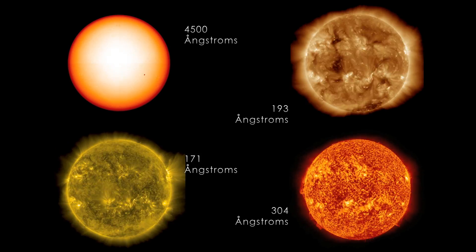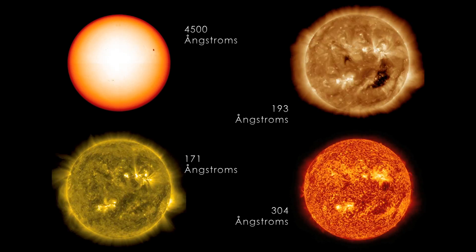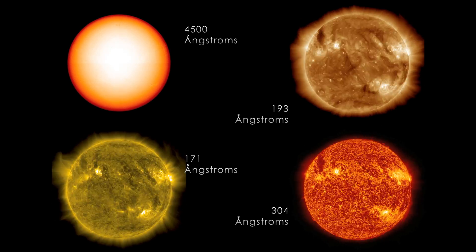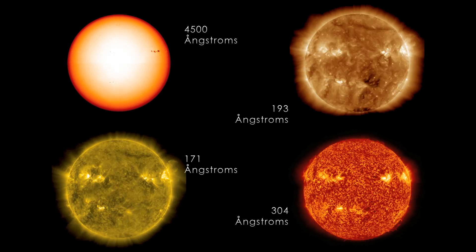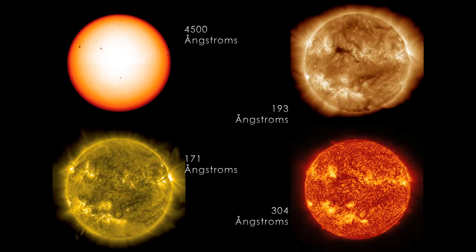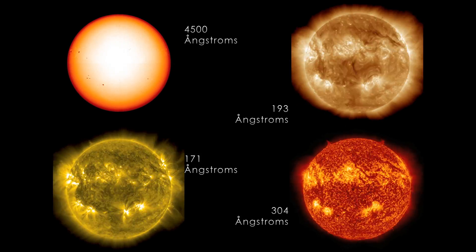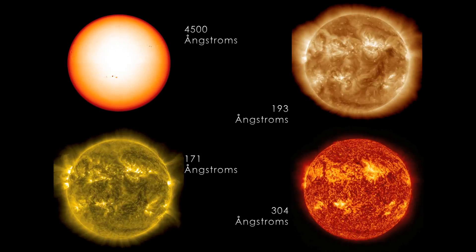And you see these dark patches — this is where magnetic fields are open out into space, letting out something called the solar wind in these very fast streams of particles. And then the last one, the red one, is a 304 angstrom. This is showing us what we call the chromosphere, and these red areas are often visible when you see the Sun during a total solar eclipse.